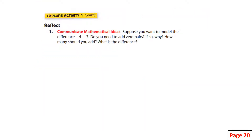Suppose you want to model the difference of negative four take away seven, or negative four take away seven positives. Do you need zero pairs? If so, why? Well, let's look at this. We have four negatives — one, two, three, four — and I want to take away seven positives. That's what this is right here.